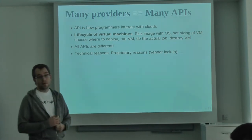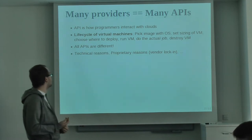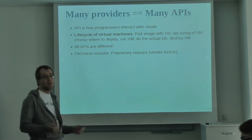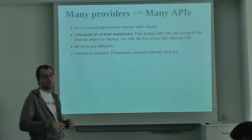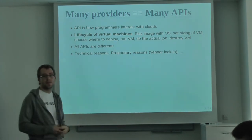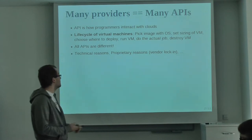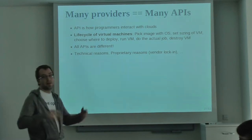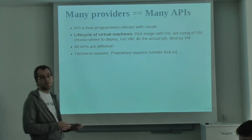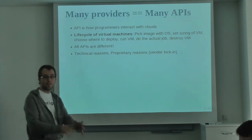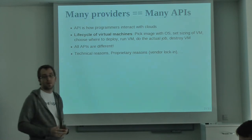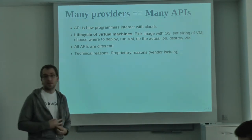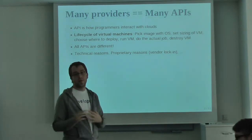As I said, all APIs are different. There are many reasons for that. There are technical reasons — vSphere will never have a REST API because all their internal application structure is SOAP-based, so there's no point. There are proprietary reasons — Amazon will never standardize their API because it's built just for their product, and they don't care about other implementations.